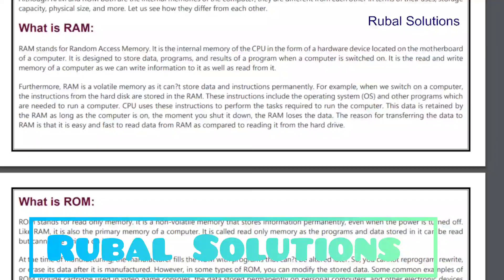Furthermore, RAM is a volatile memory — it does not store data and instructions permanently. For example, when we switch on a computer, the instructions from the hard disk are stored in the RAM. These instructions include the operating system and other programs which are needed to run the computer. The CPU uses these instructions to perform the tasks required to run the computer. This data is retained by the RAM as long as the computer is on.